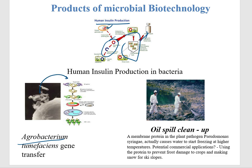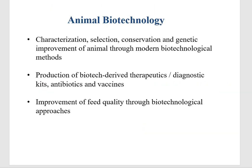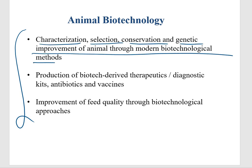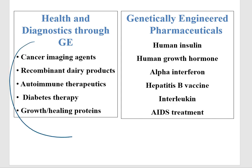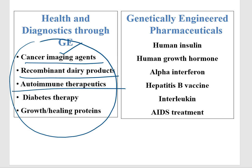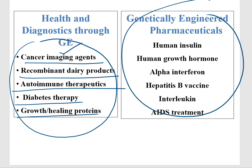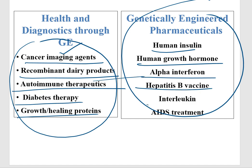Agrobacterium is used to insert a gene of interest, which can then be inserted into the plant body. Another project was oil spill cleanup, also accomplished through biotechnology. In animal biotechnology: characterization, selection, conservation, and genetic improvement of animals is done through modern biotechnology methods. Biotech-derived therapeutics, diagnostic agents, antibiotics, and vaccines are produced. In healthcare: cancer imaging agents, recombinant dairy products, autoimmune therapies, diabetes therapy, growth-healing proteins. Genetically engineered pharmaceuticals include human insulin, human growth hormone, alpha interferon, hepatitis B vaccine, interleukin, and AIDS treatments.